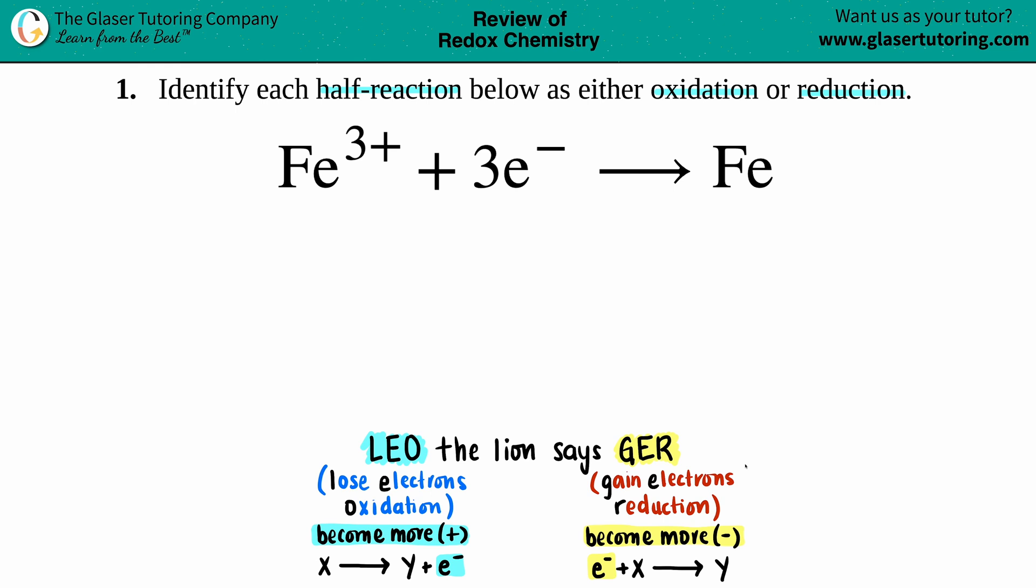When they give you a balanced equation, the easiest thing is to notice where the electrons are - whether they're on the left side (the reactants) or the products. Since my electrons are on the reactant side, that means the iron is taking these electrons in. It's basically gaining electrons, absorbing the electrons. Electrons are not being lost on the product side.